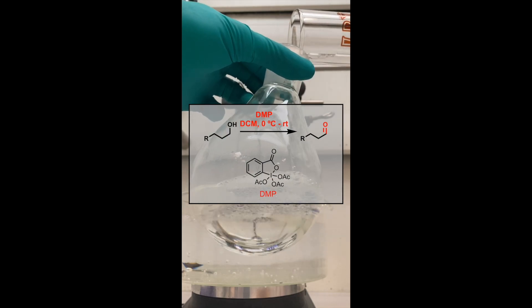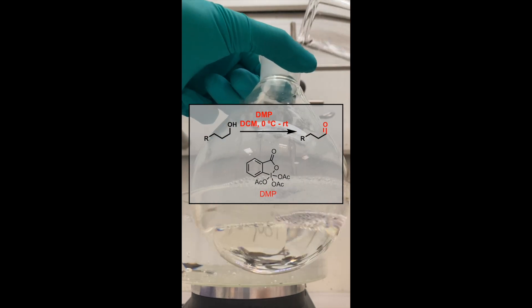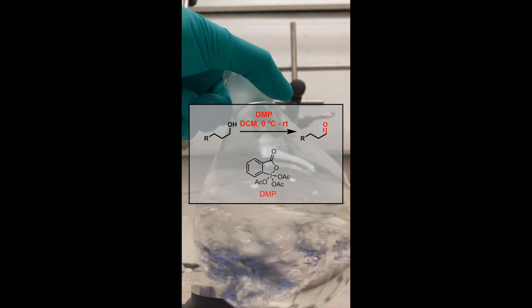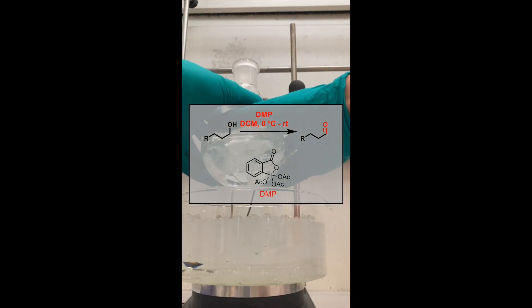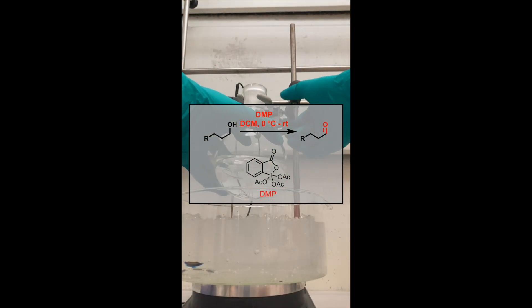One of the easiest and mildest ways to effect this transformation is through the action of Dess-Martin periodinane, DMP. DMP is a hypervalent iodine compound that is commercially available.